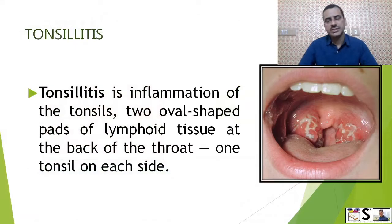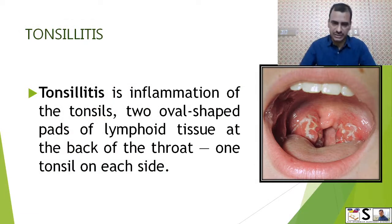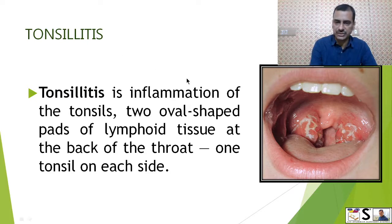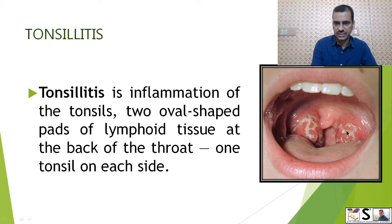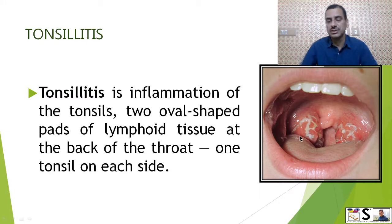What is tonsillitis? Tonsillitis is inflammation of tonsils. These are two oval-shaped pads of lymphoid tissue at the back of our throat, one tonsil on each side. When they are inflamed, this disorder is known as tonsillitis.